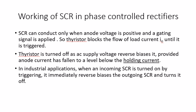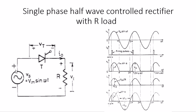Now we are going to see the working of the SCR in phase controlled rectifiers. SCR stands for silicon controlled rectifier. Silicon controlled rectifiers can conduct only when the anode voltage is positive and the gating signal is applied. Now we are going to see some explanations about this thyristor.